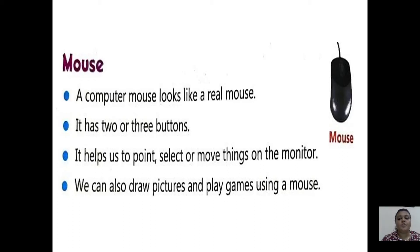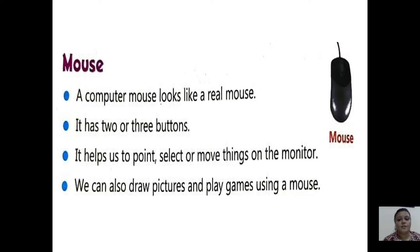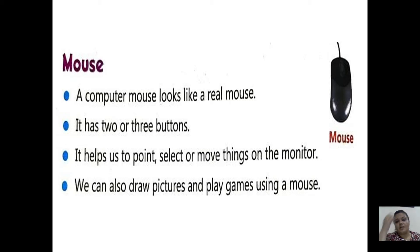Jai Swaminarayan students, today we will continue with part three of lesson number three, that is parts of a computer. Till now we studied about different parts of computers like mouse, keyboard, monitor, and CPU — these four are the main basic important parts of a computer. We also saw in the part two video about the keyboard. A keyboard is an input device; you can put in some data or information inside the computer using the keyboard. It consists of small buttons and those buttons are called keys.